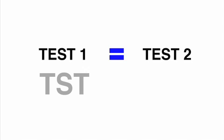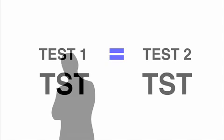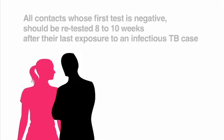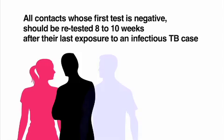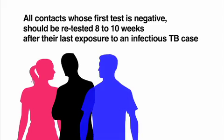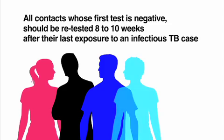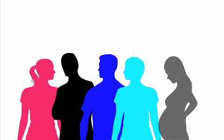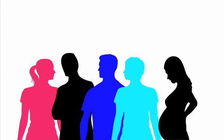In cases where you need to repeat a test, use the same test — for example, if you use a TST for the first test, use the same method for the second. A second test may be needed for contacts, that is, people who were recently exposed to someone with infectious TB. All contacts whose first test is negative should be retested 8 to 10 weeks after their last exposure to an infectious TB case. This is because it can take 2 to 8 weeks for the immune system to respond and TB infection to be detected.